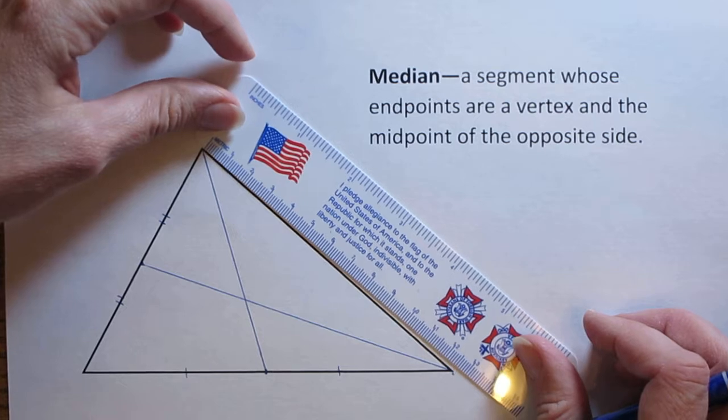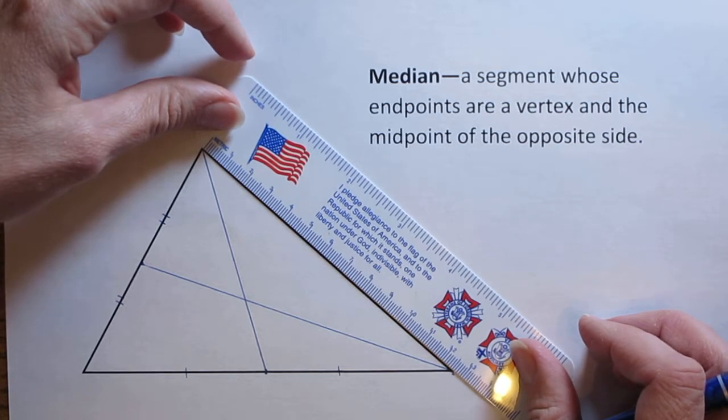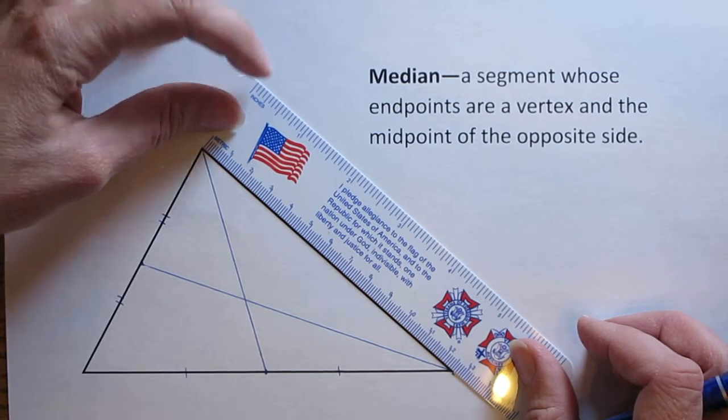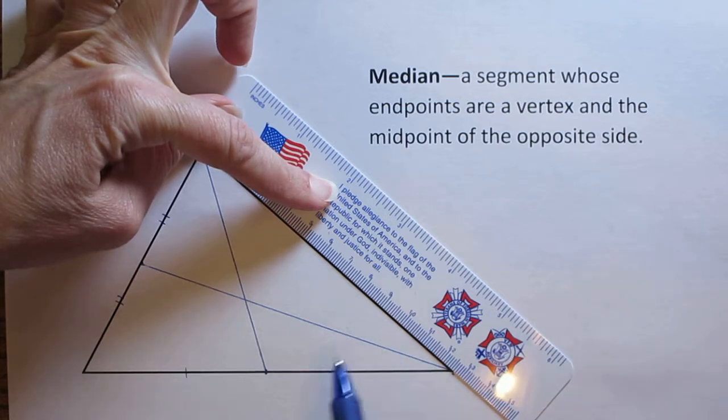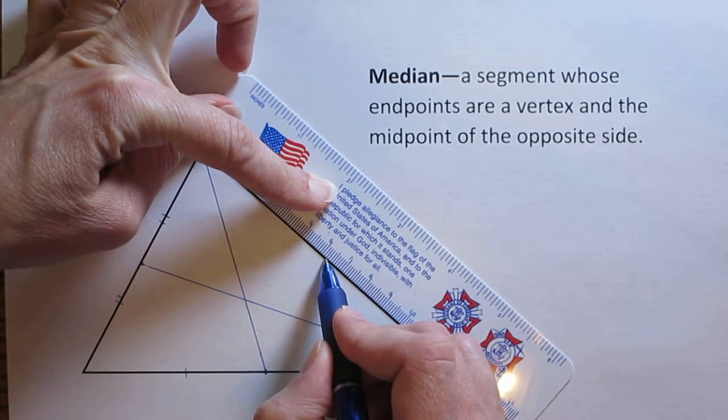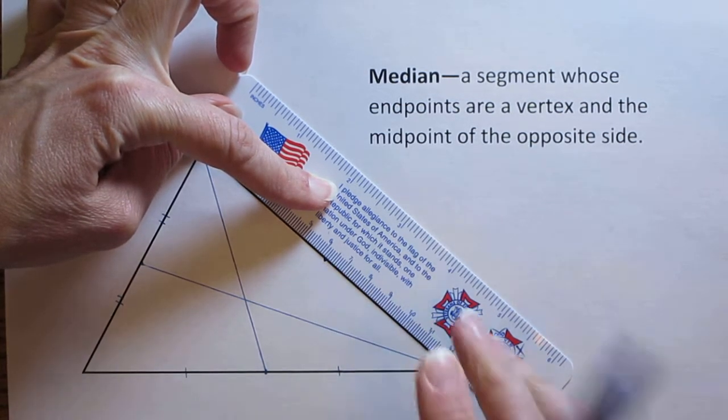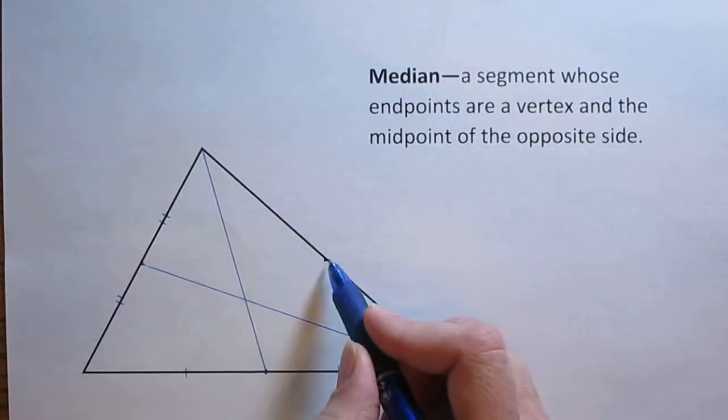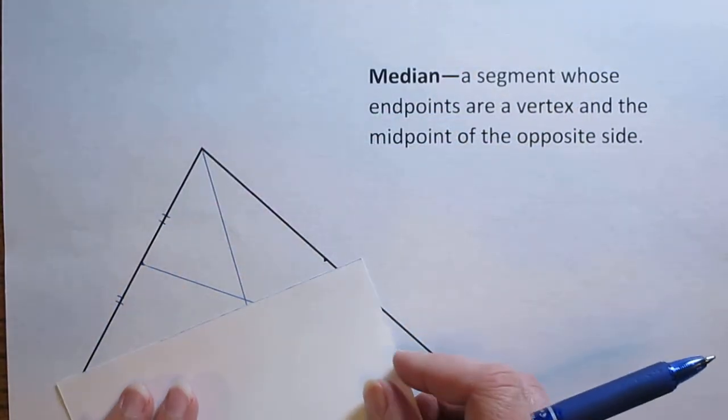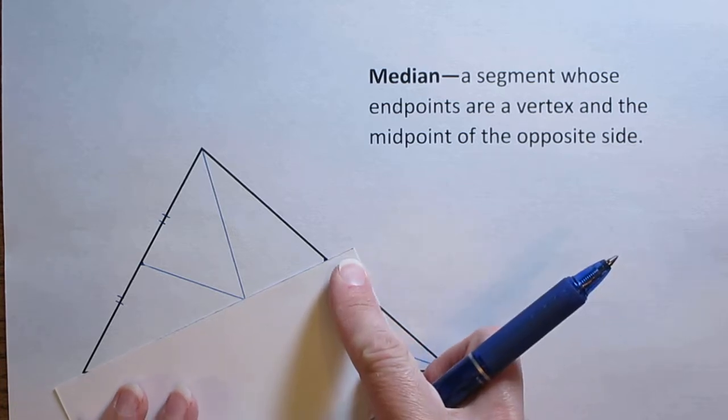One more side here and measure that. That looks to be about 12½ inches long. So 12½, half of that is going to be about 6¼. So 6¼ right there. There's my midpoint. I'm going to connect that to the opposite vertex.